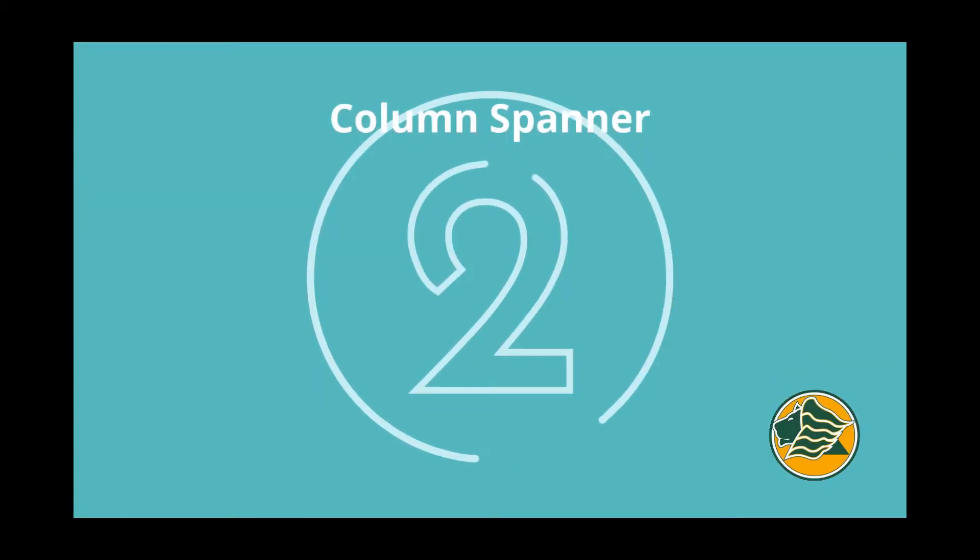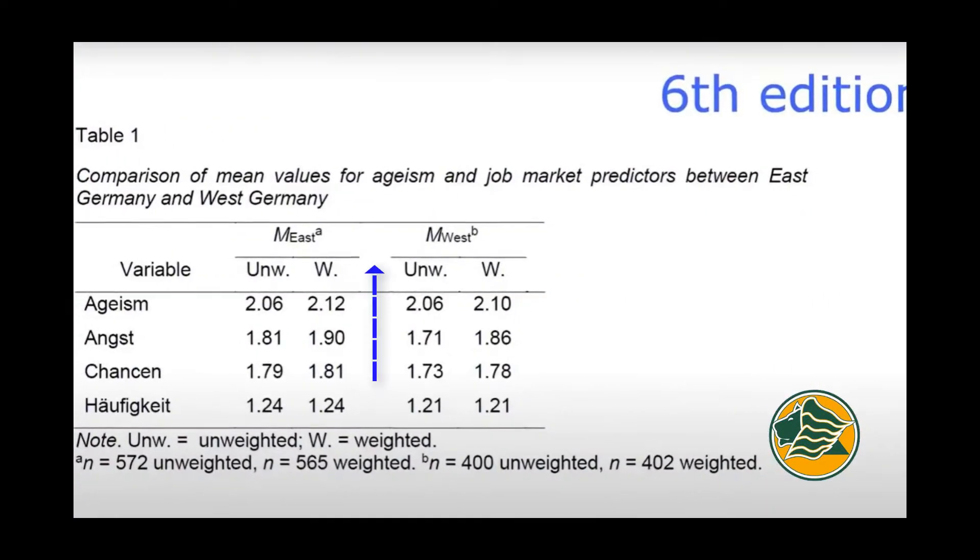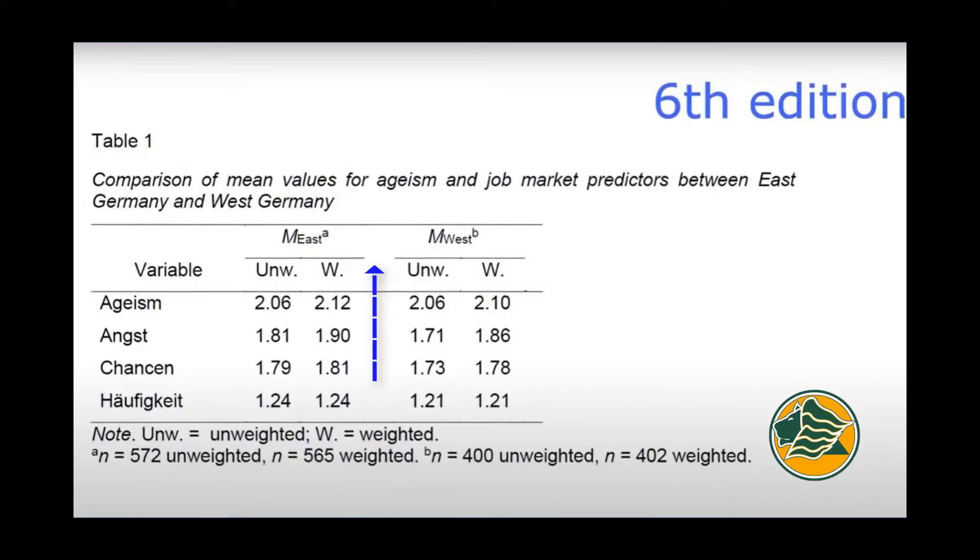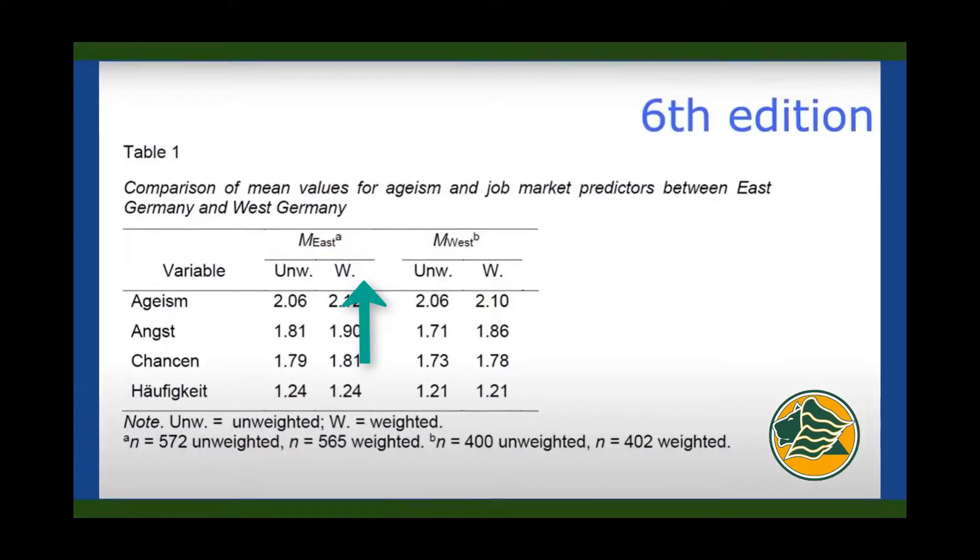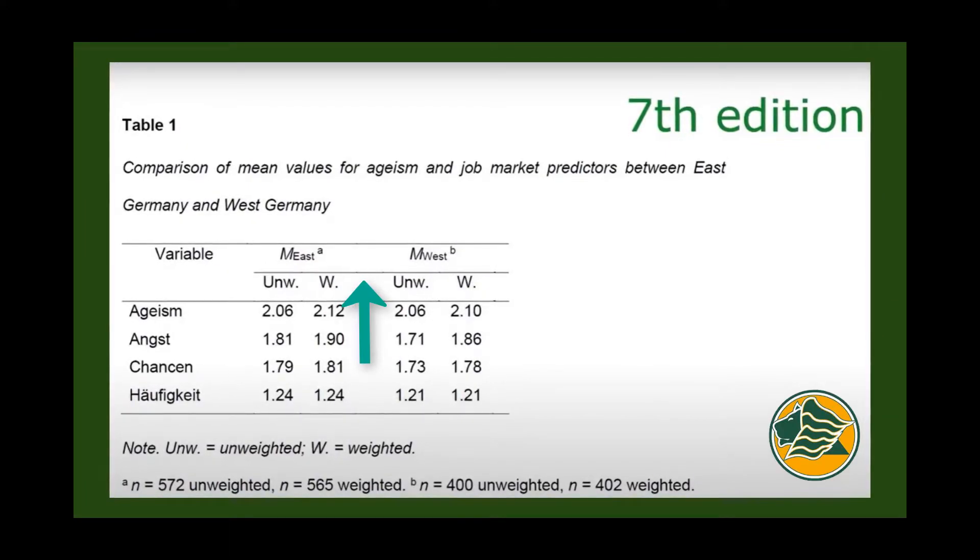The second change is the column spanner. In the 6th edition, you see we have two groups, mean east and mean west. There is a space in the line between them. In APA 7, the line goes all the way across with no space.